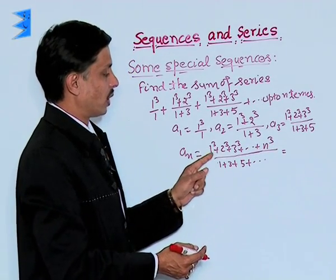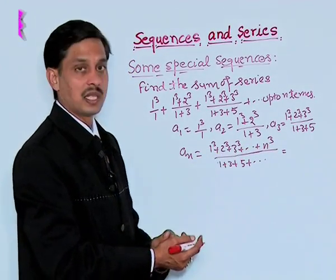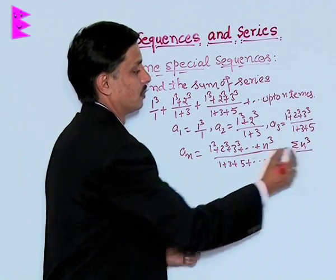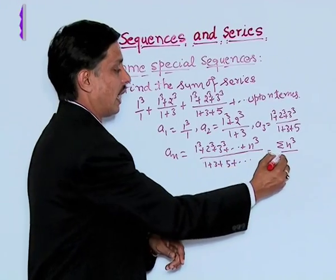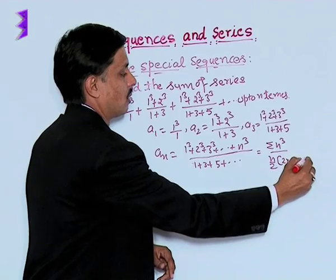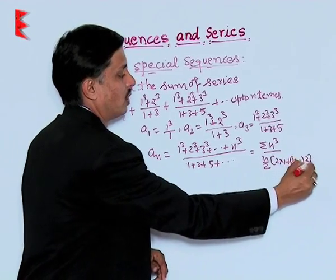We know that 1 cube plus 2 cube plus 3 cube plus n cube, this is sigma n whole cube, and this will be n by 2, 2a plus n minus 1 into d.